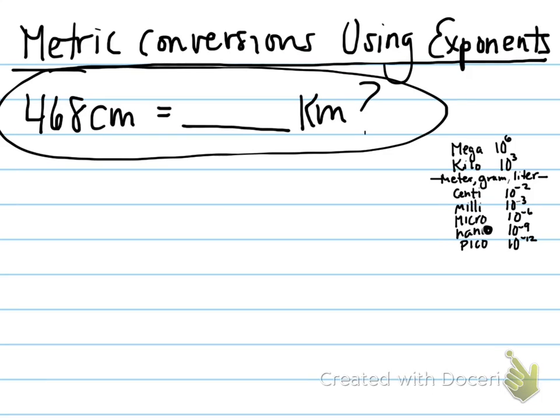This is a tutorial on doing metric conversions using exponents or powers of 10. When faced with a question like 468 centimeters equals how many kilometers, using exponents makes your conversions much easier.